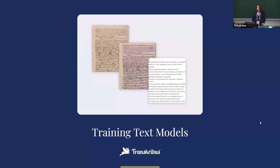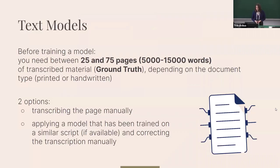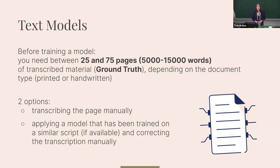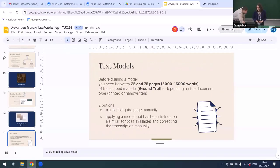Starting with training text recognition models: before training you need ground truth material — about 25 to 75 pages of already-transcribed material to start. We recommend at least this amount, though you can start with fewer pages depending on your document type.